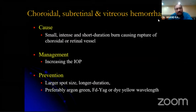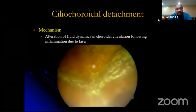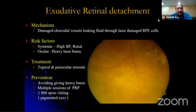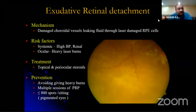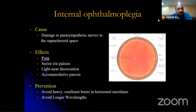Choroidal, sub-retinal, and vitreous hemorrhages can happen due to small intense short-duration burns causing rupture of choroidal or retinal vessels. Manage by increasing IOP — press on the globe. Prevention: use larger spot size, longer duration, and lesser power. Choroidal detachments and exudative retinal detachments can occur rarely due to fluid dynamic changes in choroidal circulation following laser-induced inflammation. Risk factors include hypertension and heavy laser burns. Multiple sessions of PRP with a lesser number of equivalent spots per sitting are advised, especially in pigmented eyes and nephropathy patients.